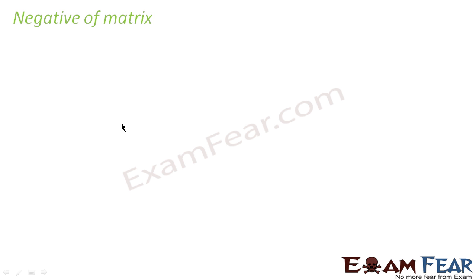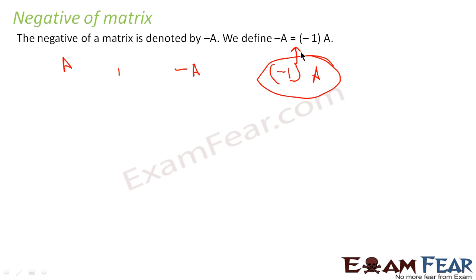It's just a fancy term given but it's nothing but minus 1 into a matrix. We have this matrix A. Then negative for the matrix is minus A. That is nothing but minus 1 into A. This is scalar multiplication of minus 1 with the A. You get negative of the matrix.